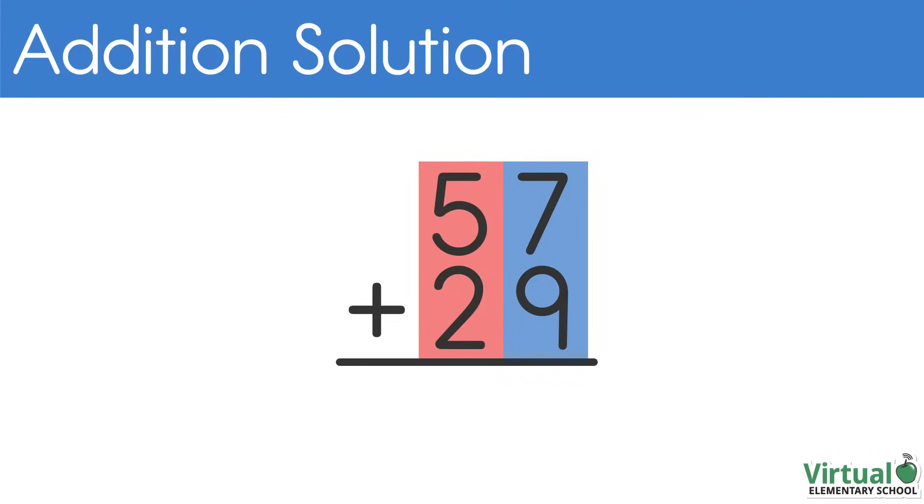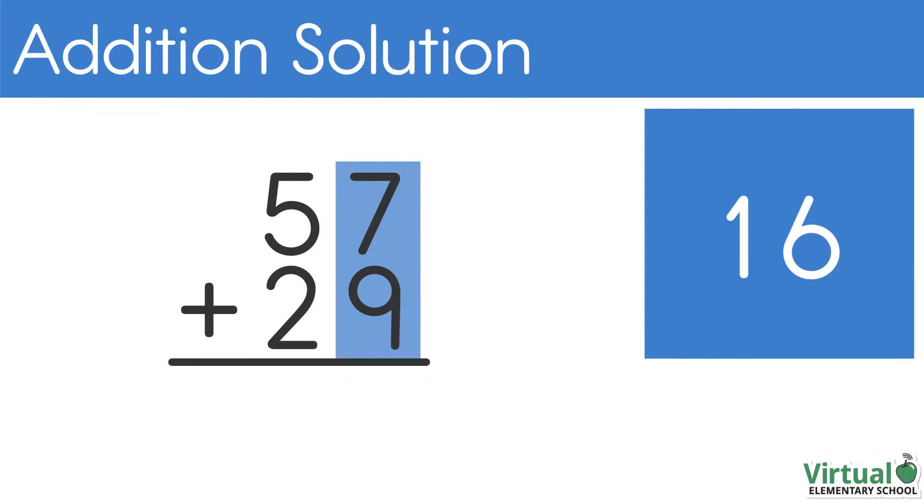We start solving the addition equation by adding the numbers in the ones place. 7 plus 9 equals 16.